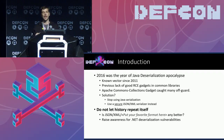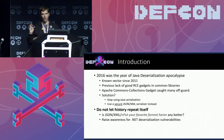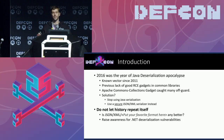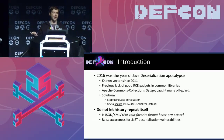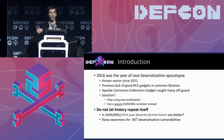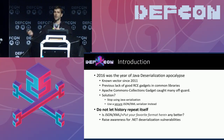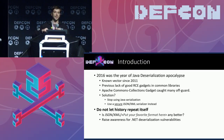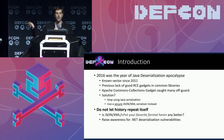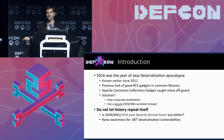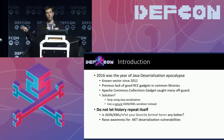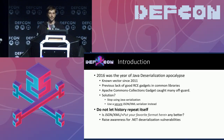At that time the solution was: stop using Java deserialization altogether. And developers were like, well, I would like to do so, but I need to serialize my objects, store them into a database, or send them across a wire or a socket. So I need to serialize my objects. And the security guys were like: use a secure JSON or XML parser or library instead.